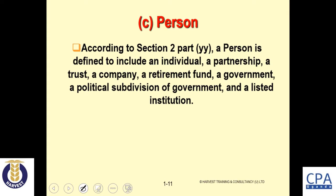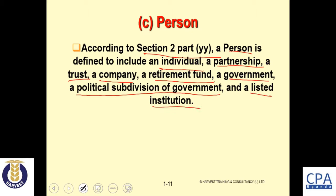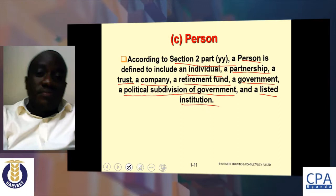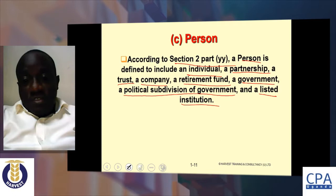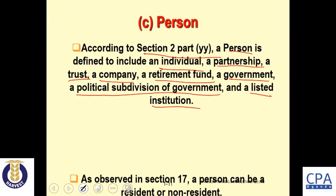According to Section 2 of the Act, which contains almost all definitions, a person is defined to include an individual, a partnership, a trust, a company, a retirement fund, a government, a political subdivision of government, and a listed institution. So a person is wider than just a human being.